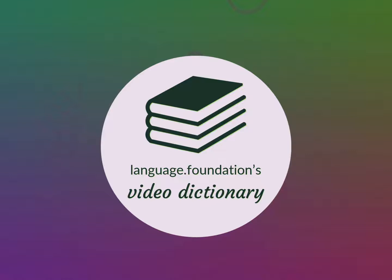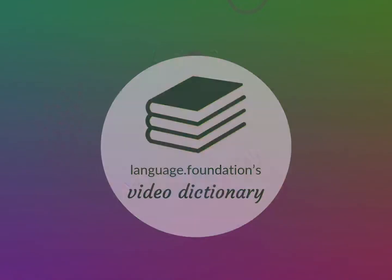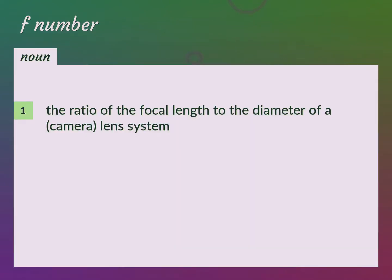Language.Foundation's Video Dictionary, helping you achieve understanding. The ratio of the focal length to the diameter of a camera lens system. Focal Ratio, Speed, Stop Number.